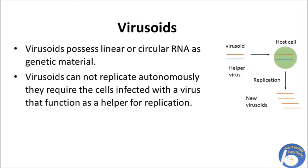Virusoids possess linear or circular RNA as genetic material. Virusoids cannot replicate autonomously. They require cells infected with a virus that functions as a helper for replication.